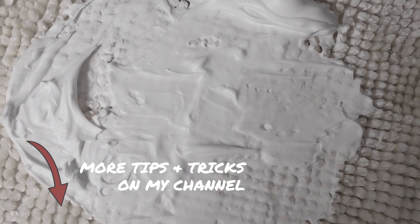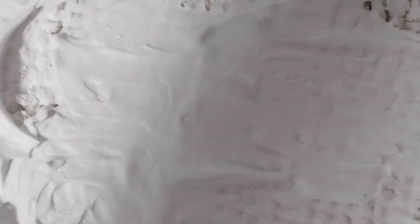Shaving cream is a foaming agent, which means it creates a lot of bubbles. The bubbles attach themselves to the dirt and stains on your rug and then burst, releasing the dirt and stains into the water.